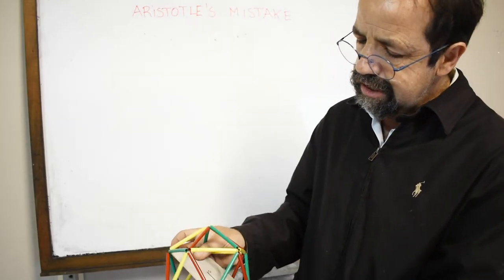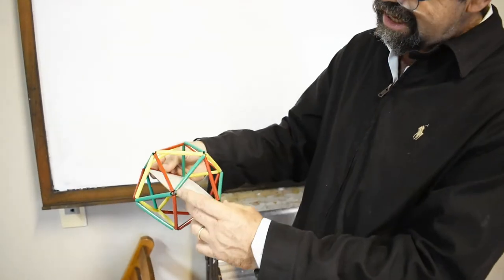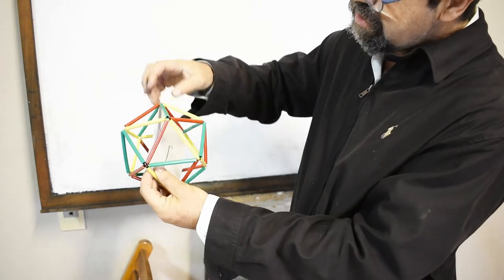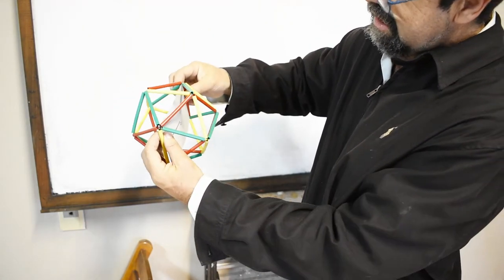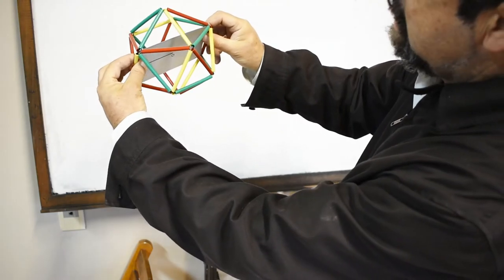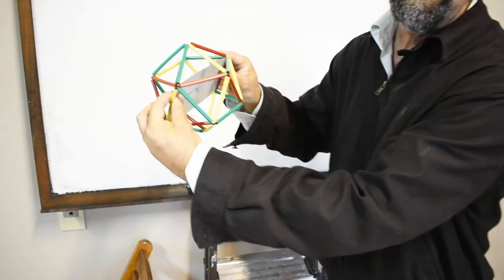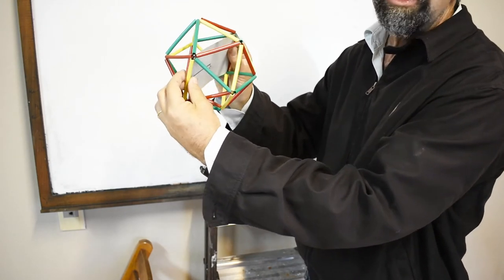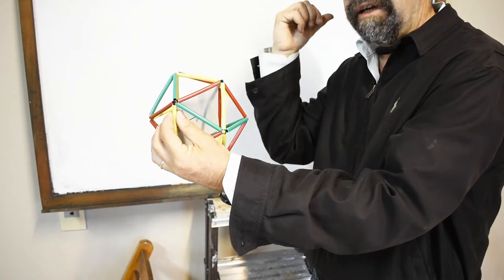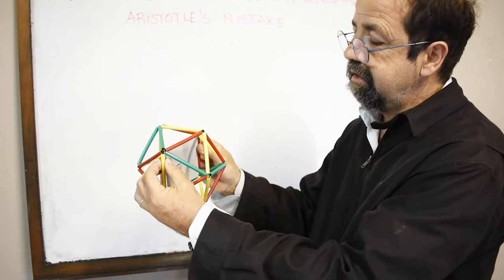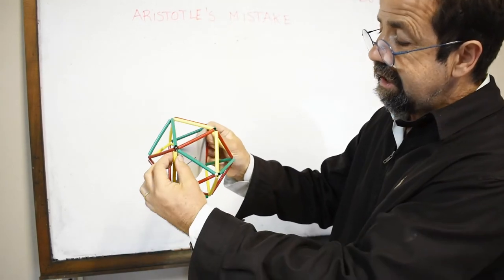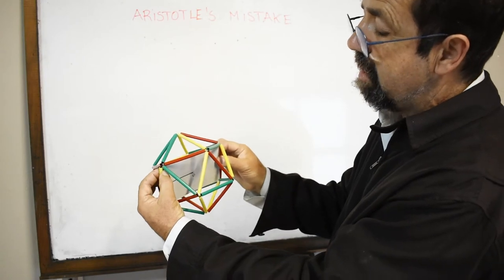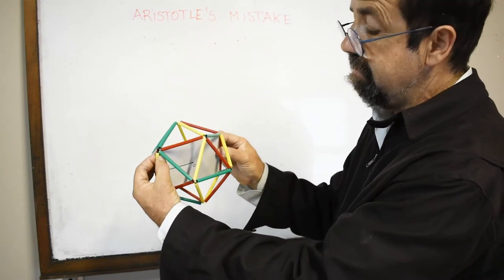This is a rectangle where the short side is one, since we are taking one as the edge length of the icosahedron. The long side is the diagonal of a regular pentagon, which we found in a previous video to be the golden number. So if this is one, since this is the diagonal of a pentagon, this is the golden number.